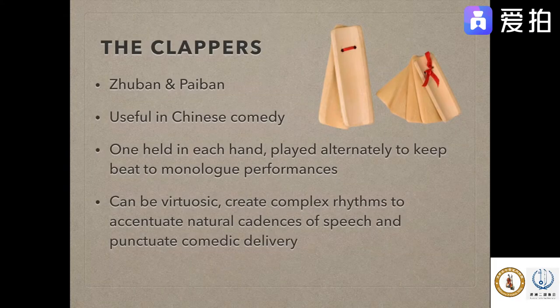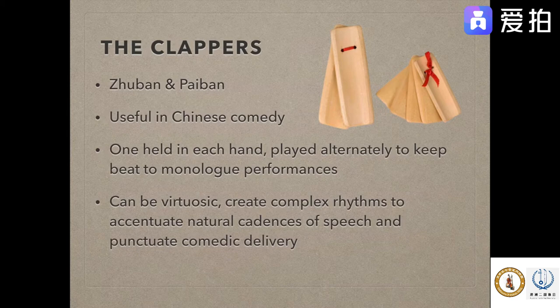For clappers, there are two main varieties: the zuban and the paiban. These are mainly used in Chinese comedy — they have a very clacky sound with a large attack, so naturally they're used to emphasize certain moments for comedic purposes. One is usually held in each hand and played alternately to keep a beat to monologue performances. They can be virtuosic and create complex rhythms to accentuate the natural cadences of speech and punctuate comedic delivery.